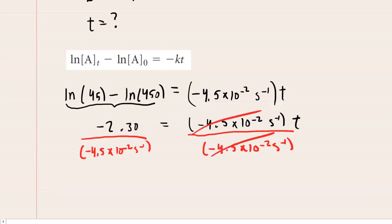And when you compute that, you get about 51 seconds as the amount of time for the pressure to reach one-tenth of its initial value.